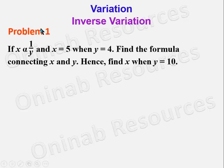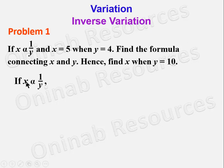We take our first example on inverse variation. If x varies inversely as y and x = 5 when y = 4, find the formula connecting x and y, and hence find x when y = 10. In our solution, if x varies inversely as y it means x = k/y.